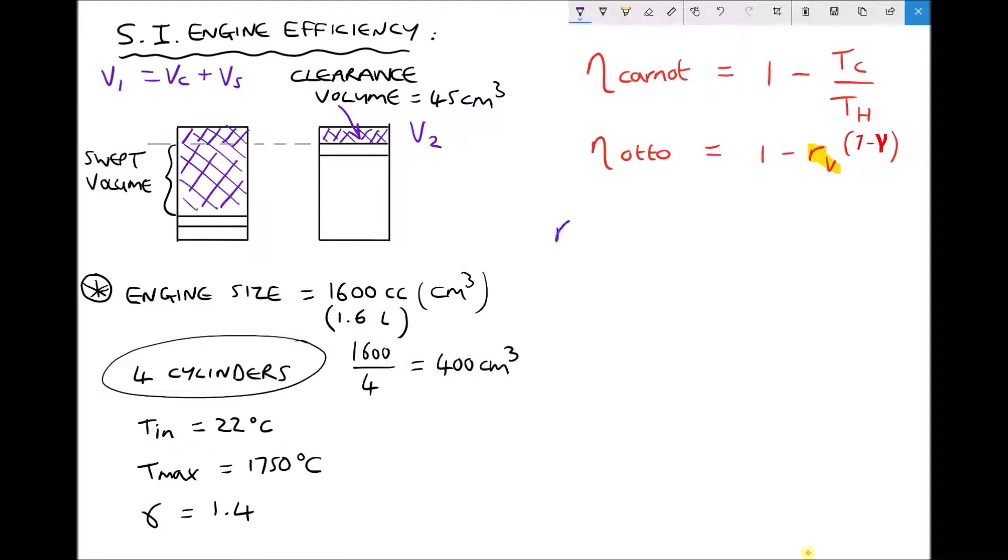Our Carnot efficiency is one minus the cold temperature over the hot temperature. We need to be careful because we need to work in Kelvin. To get from degrees C to Kelvin, we add 273.15 Kelvin. We have 1 minus (22 + 273.15) divided by (750 + 273.15). That gives us a Carnot efficiency of 85.4%.